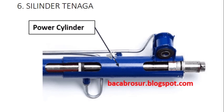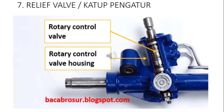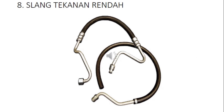Fungsi silinder tenaga adalah untuk menyalurkan aliran oli atau fluida ke tie rod atau rack and pinion yang sesuai dengan arah kemudi. Kemudian komponen yang ketujuh adalah relief valve atau katup pengatur, atau juga flow control valve. Fungsinya adalah untuk mengatur sirkulasi aliran fluida atau oli yang bertekanan sesuai dengan arah kemudi. Kemudian komponen yang kedelapan adalah selang tekanan rendah. Selang tekanan rendah fungsinya adalah sebagai tempat mengalirnya fluida bertekanan rendah dari rotary control valve menuju ke reservoir tank.